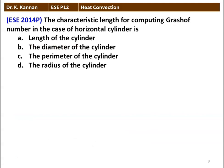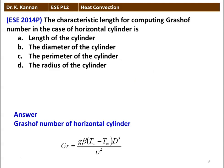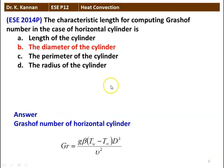Next question: the characteristic length for computing Grashof number in the case of a horizontal cylinder is — length, diameter, perimeter, or radius of the cylinder. The correct answer is diameter. The Grashof number for a horizontal cylinder is defined as Gr = g*beta*(Tw - T_infinity)*D³ / nu², so the characteristic length is the diameter.